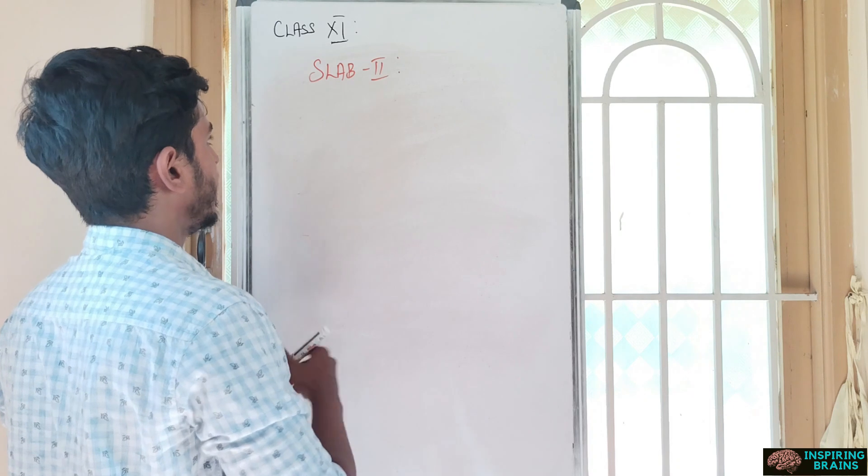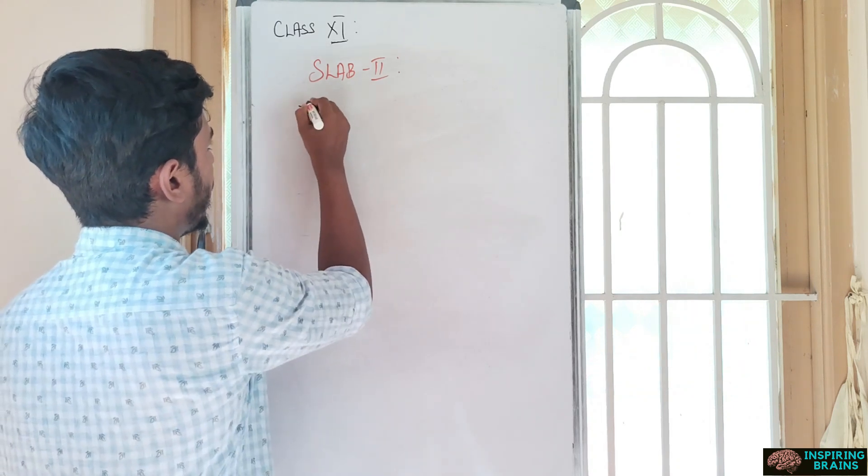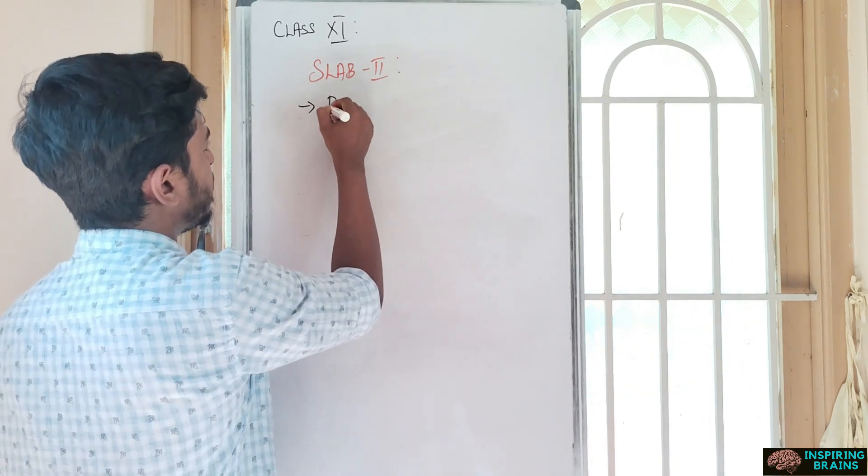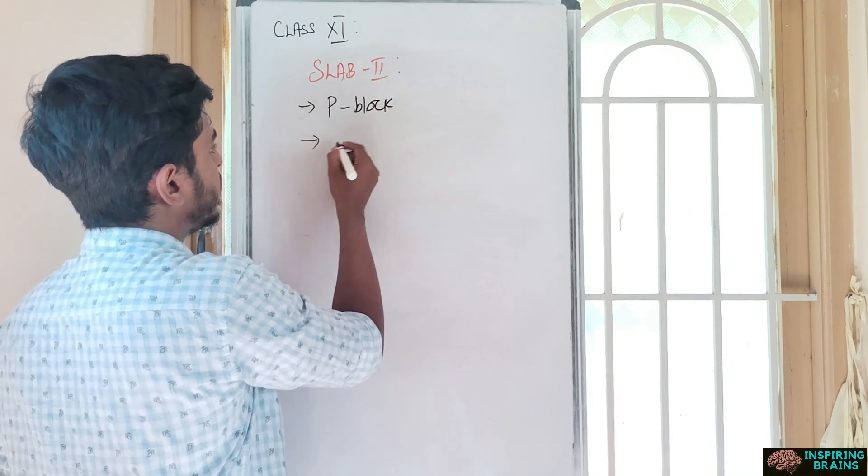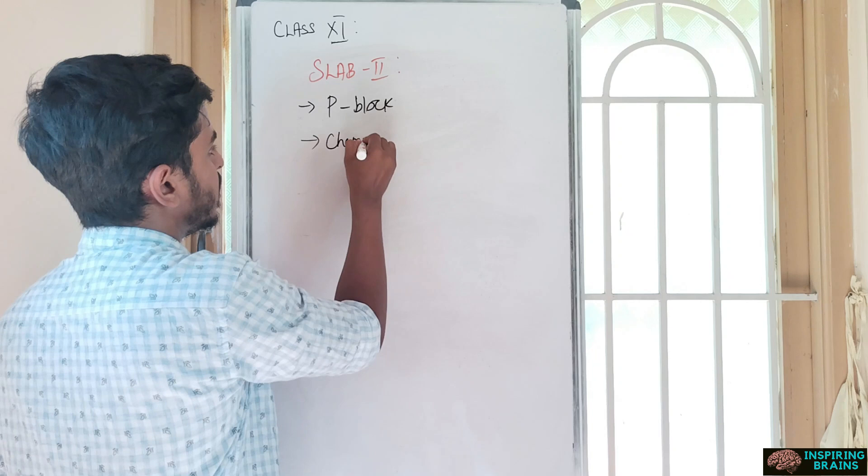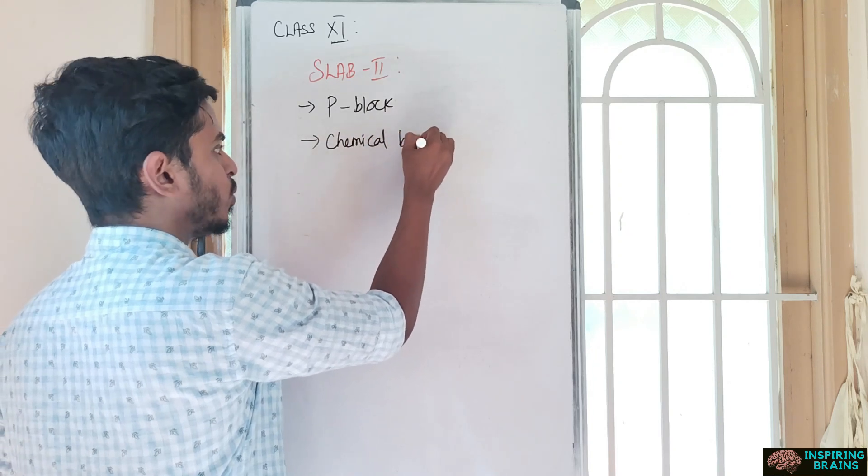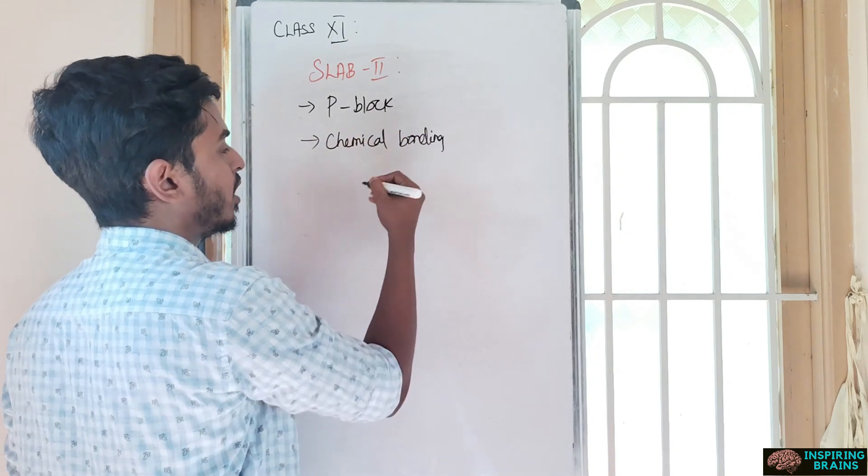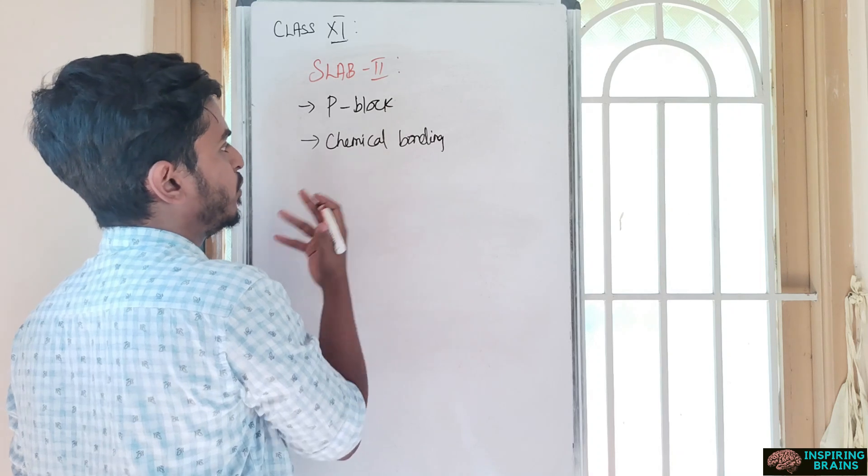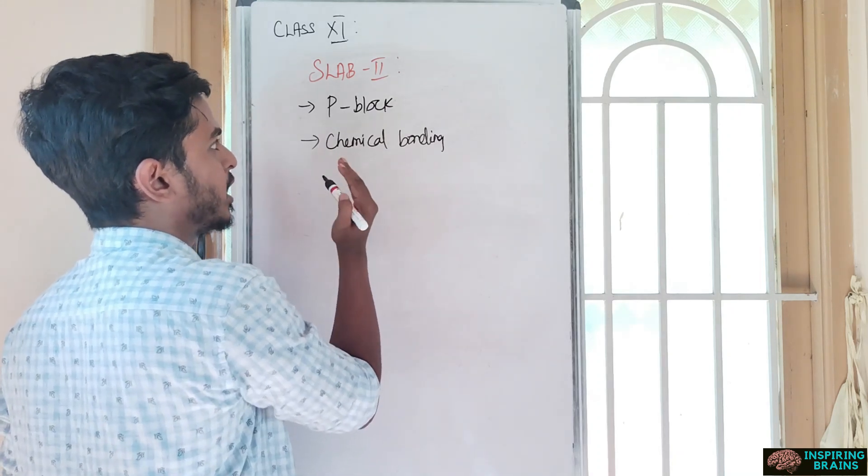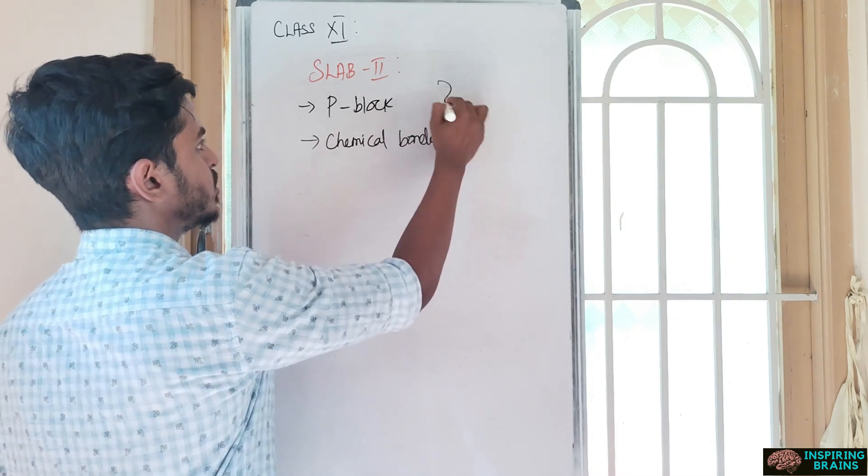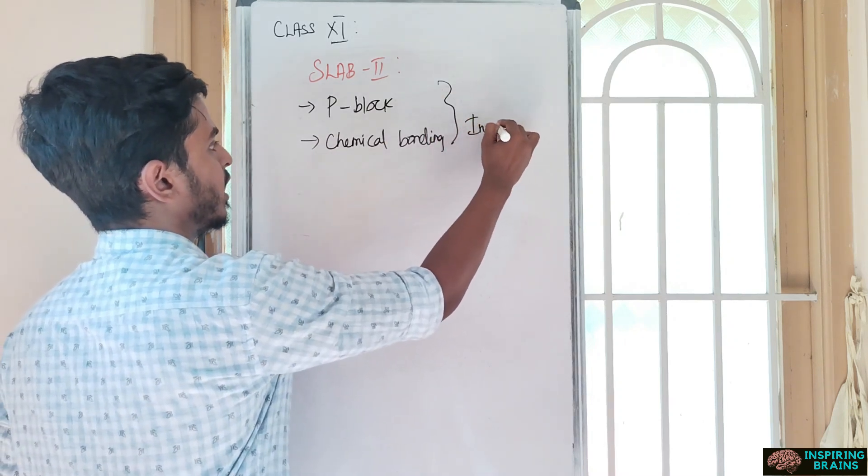Now slab two. Starting with inorganic - you can go with P block, you have to complete both 11th and 12th portions. Then chemical bonding. Actually chemical bonding is a high weightage unit, but you cannot study it in a hurry, so I kept it in slab two.